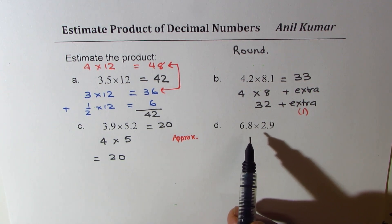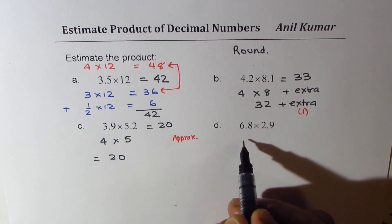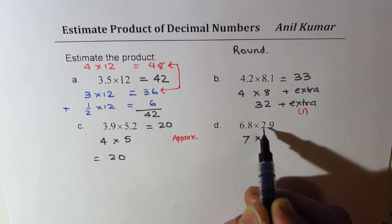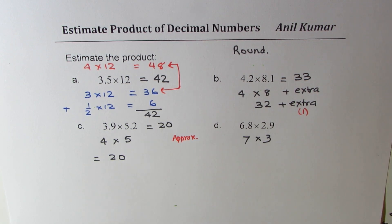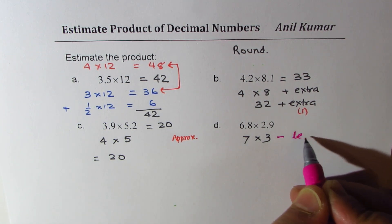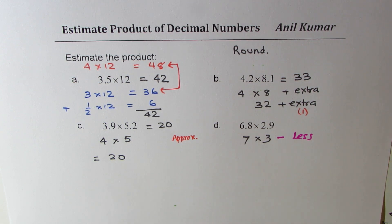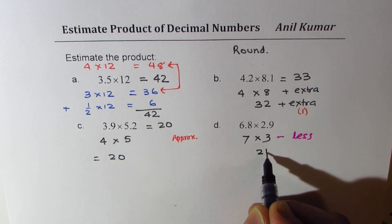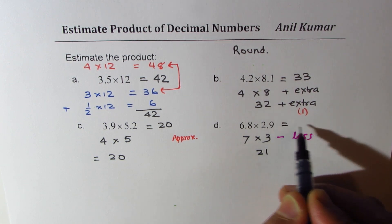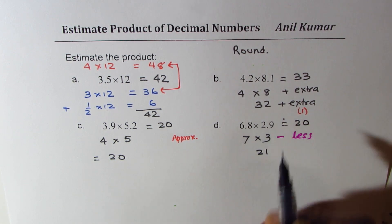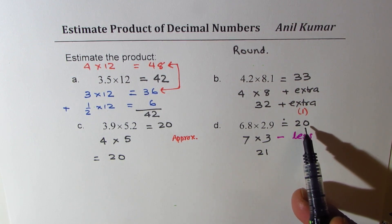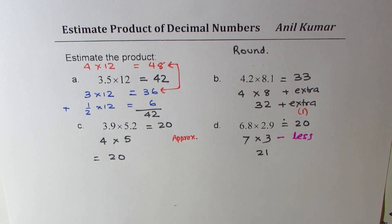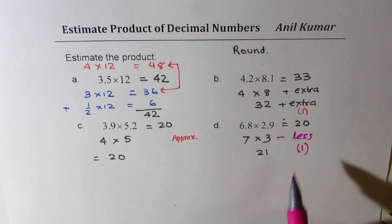Let's do the last case here. 6.8 could be written as 7 and 2.9 could be written as 3. Now we have both of them in higher approximation, so we know we should take away something. 7 times 3 is 21. So we could write this as 20 as an approximate estimate, something less. You could write 19 also. We have taken the less portion as 1 in this particular case.